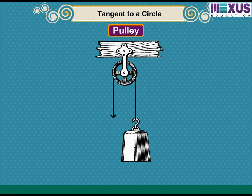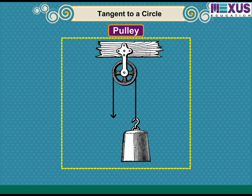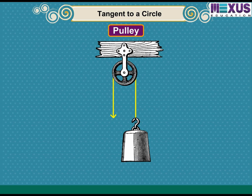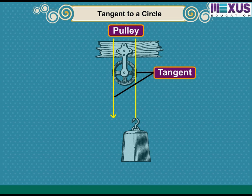Have you seen a pulley fitted over a well, used to fetch water? The rope on both sides of the pulley touches the circle of the pulley at one point. If the rope on both sides of the pulley is considered as a line, then it would be like a tangent to the circle with respect to the pulley, as the line touches the circle at one point.